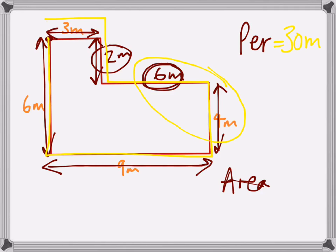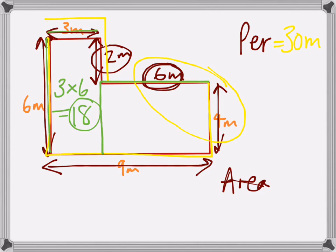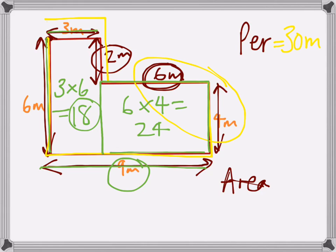To work out the area of this compound shape, you need to split it into rectangles. Putting a line going down gives us a rectangle on the right and a rectangle on the left. The one on the left has dimensions of three metres wide and six metres long, so three times six gives us eighteen square metres. The one on the right-hand side would be six times four, which gives you twenty-four. Be very careful because it's tempting to use the nine, but remember the nine goes all the way along the bottom and not just this little measurement.